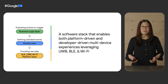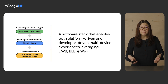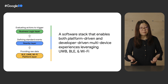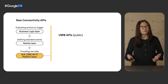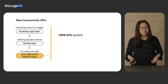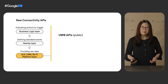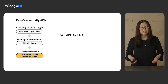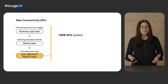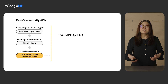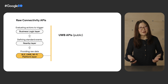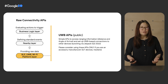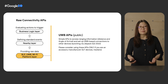We've been hard at work on building out a software stack to enable both platform-driven and developer-driven multi-device experiences, leveraging ultra-wideband, Bluetooth, and Wi-Fi. At the bottom of the stack is all our raw connectivity data. We have existing APIs here for Bluetooth and Wi-Fi today. The platform recently introduced support for ultra-wideband, which is a new radio technology that provides accurate and secure relative positioning, enabling location and orientation awareness between phones and other devices. We will have a set of simple ultra-wideband APIs launching via Jetpack in the coming month.